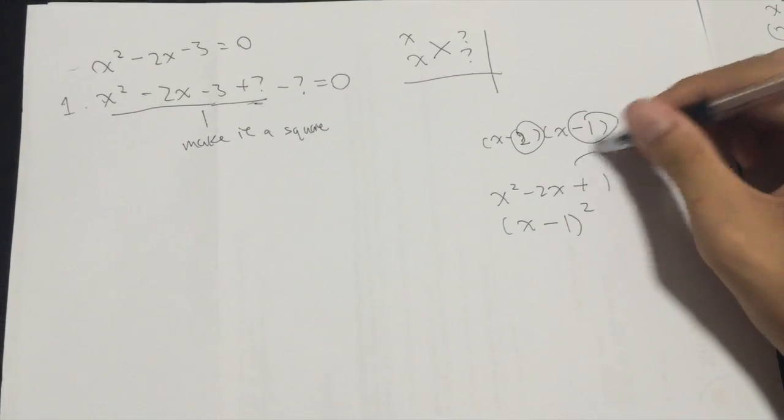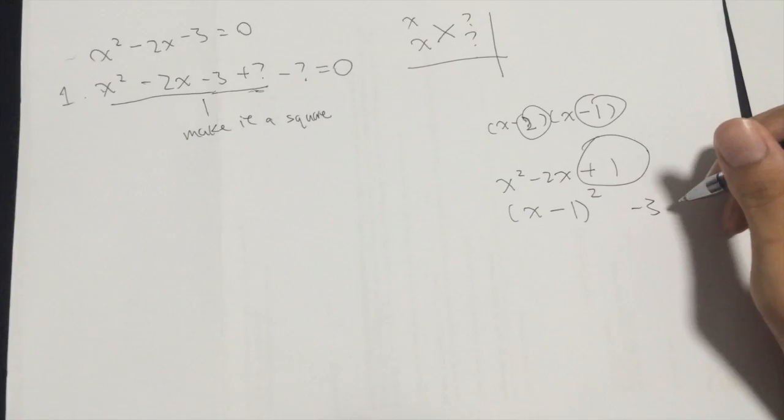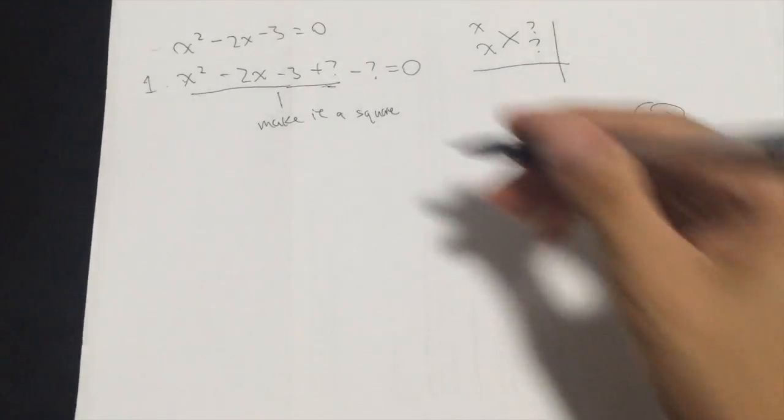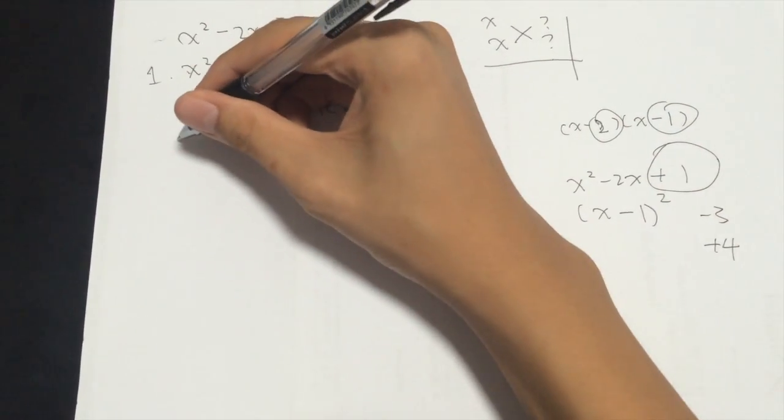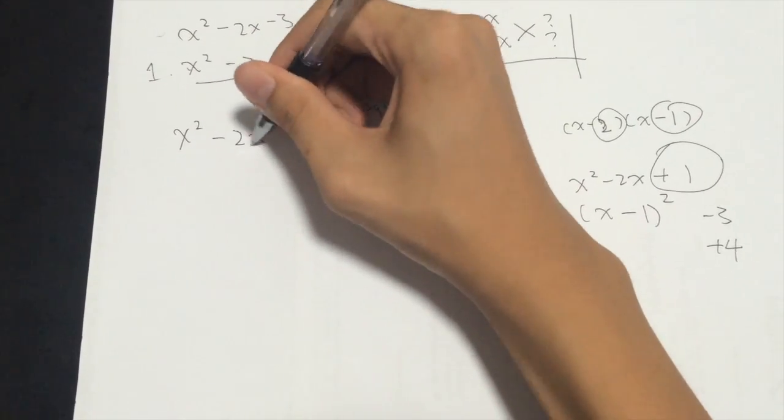Alright, so for plus 1, what do we have to plus for minus 3 to make it plus 1? It will be plus 4. So from here, we have to add plus 4 to the back of the equation and minus it off later.